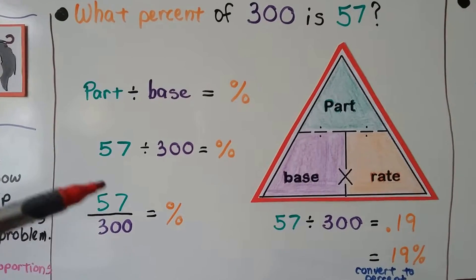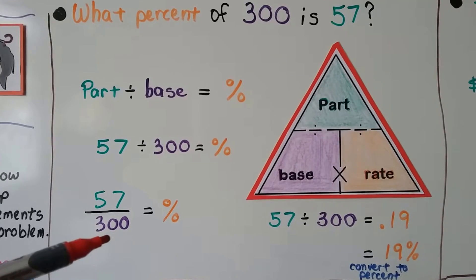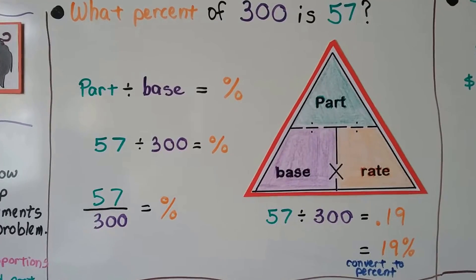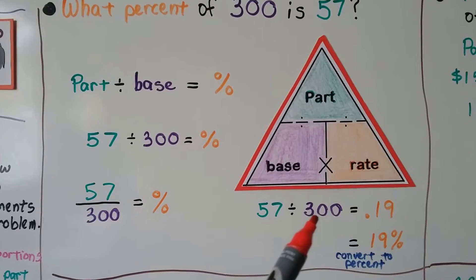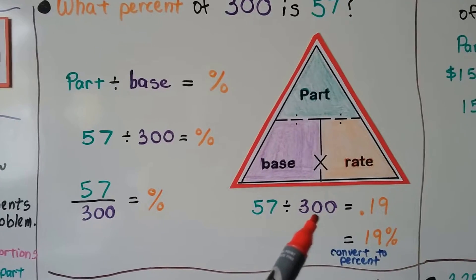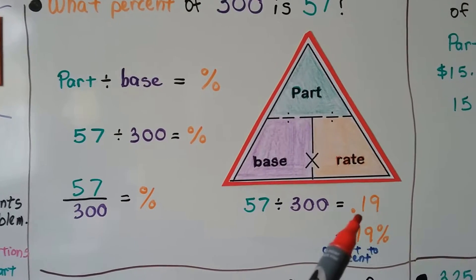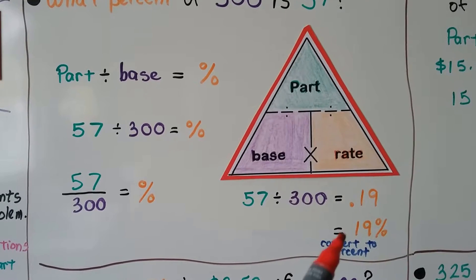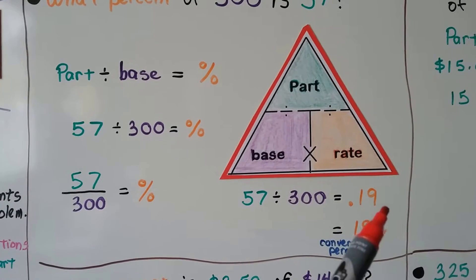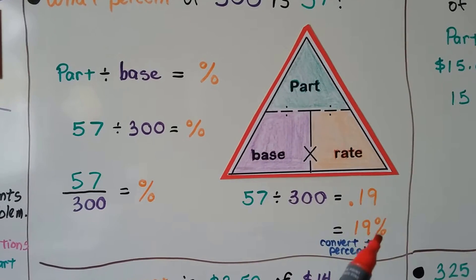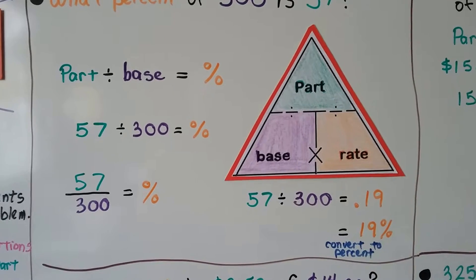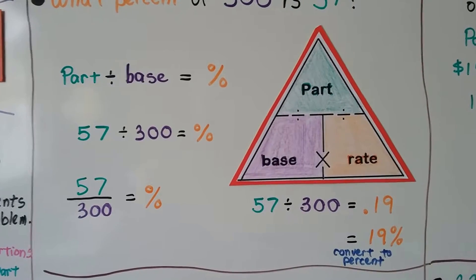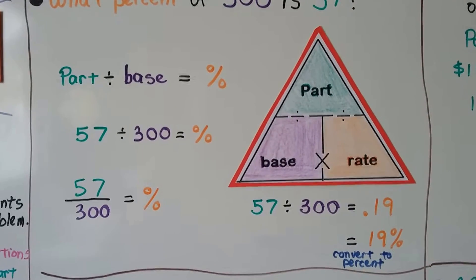We can also look at it as a fraction, because fractions are little division problems. 57 divided by 300 — we do that on our calculator and it gives us 0.19, 19 hundredths. We move the decimal point back two hops and add the percentage sign to convert it to a percent. We have 19 percent.